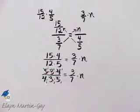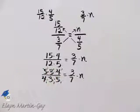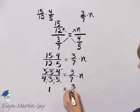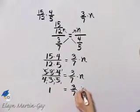So what do we have here? On the left side, I have 1 times 1 times 1 all over 1 times 1 times 1. So I have 1 equals 3 sevenths times n.